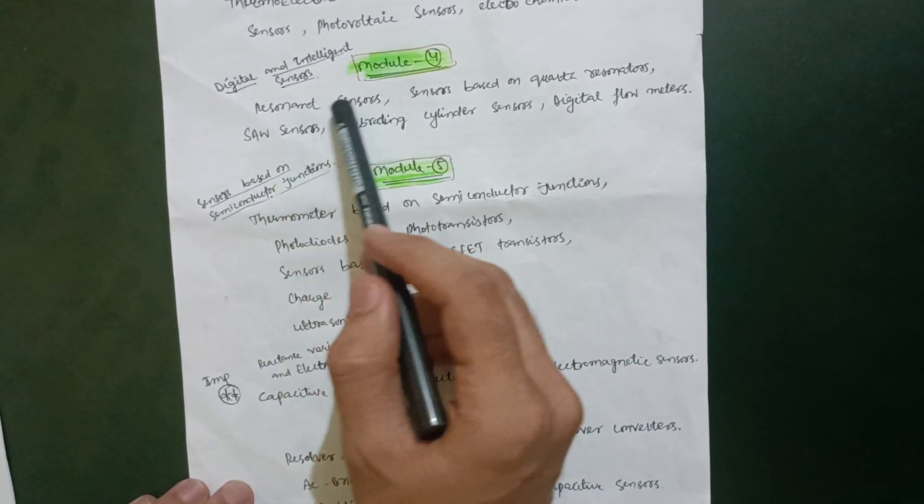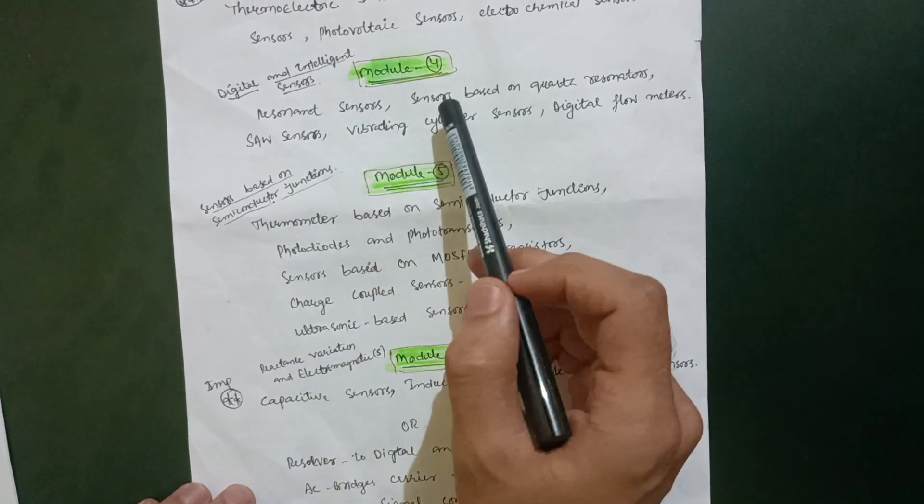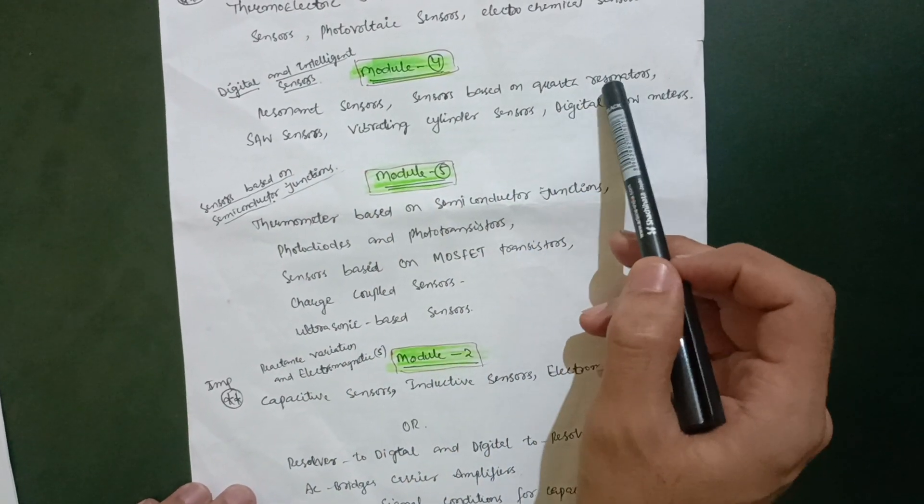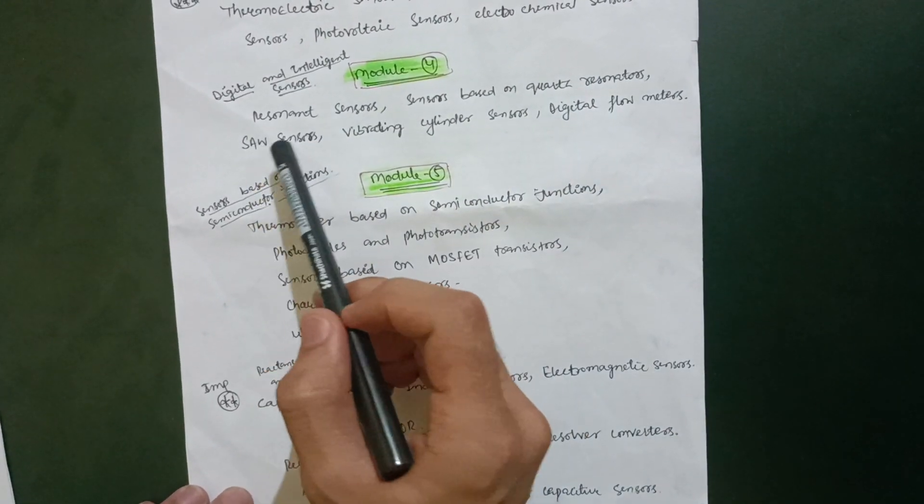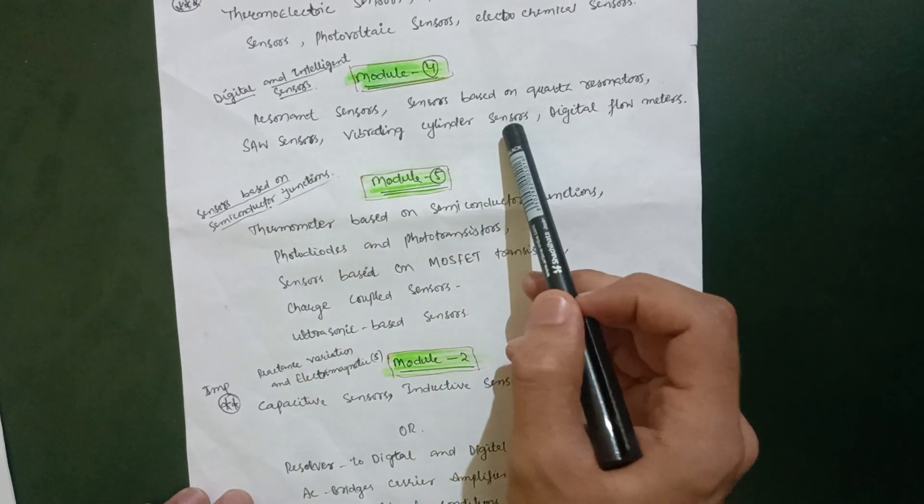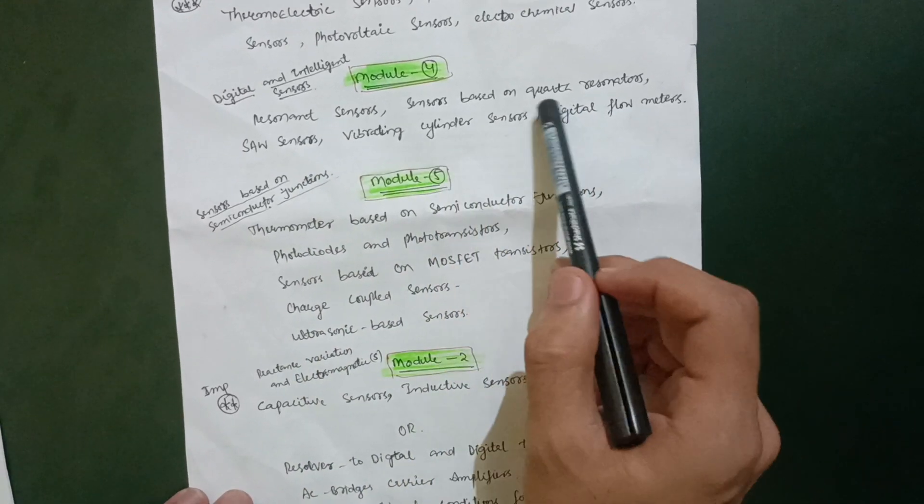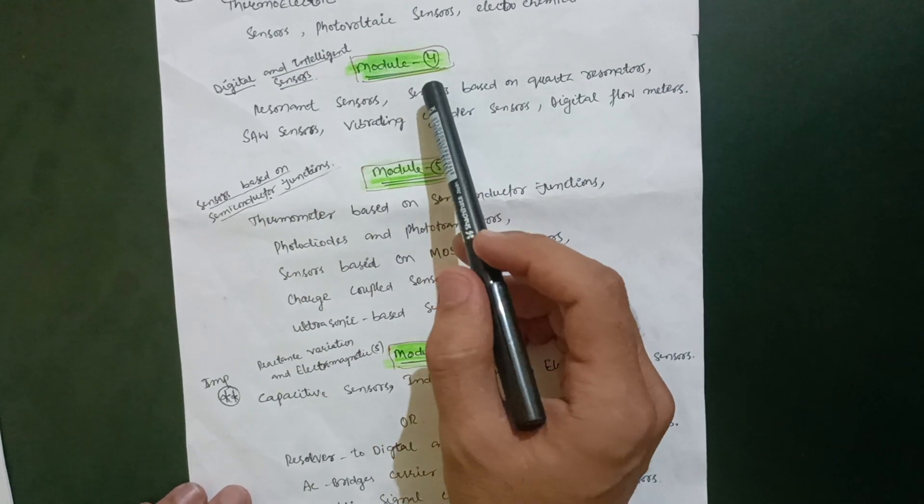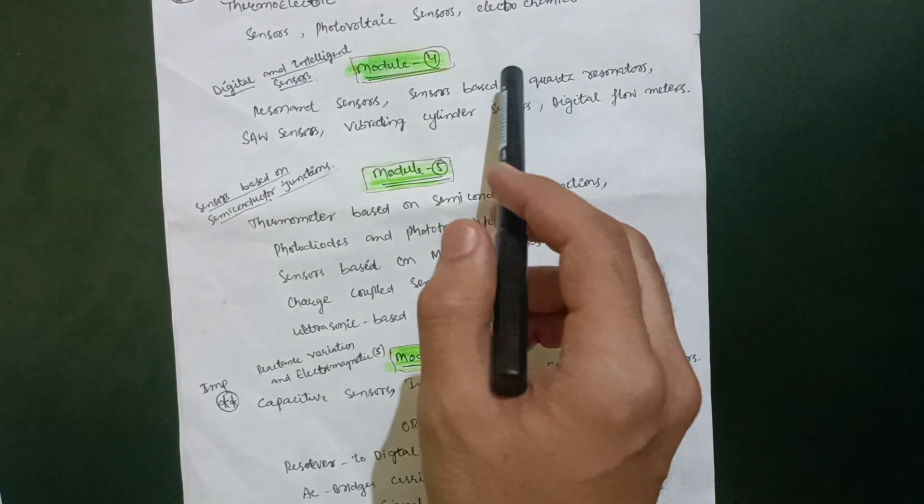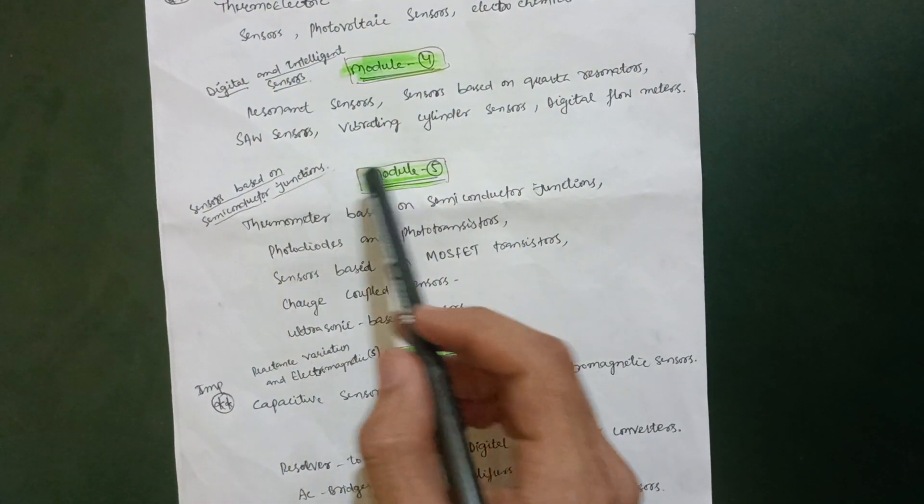The topics you have to cover in this particular module are resonant sensors, sensors based on quartz resonators, SAW sensors, vibrating slender sensors, and digital flow meters. These are the topics to cover in Module 4, so you can easily score 20 marks in this module.